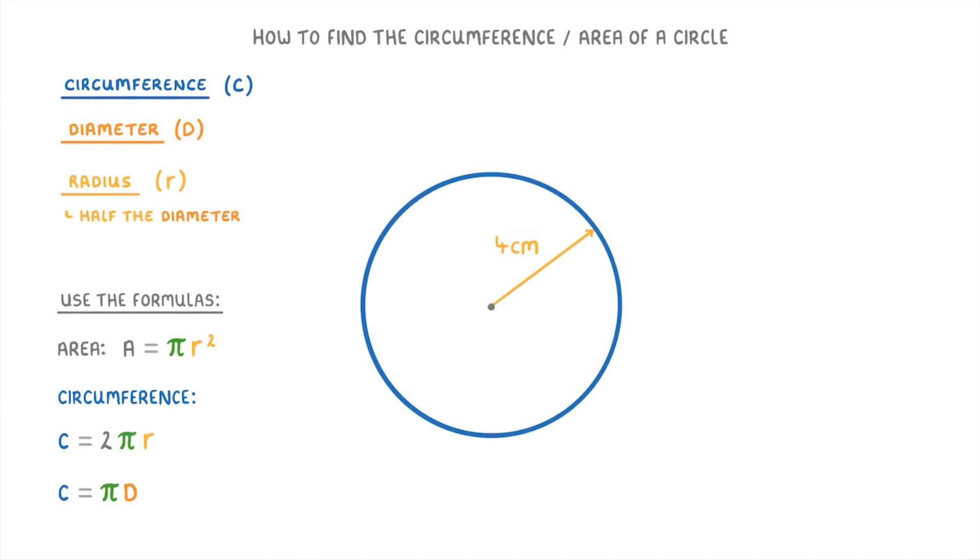To see how the equations work, let's take this circle here, and try to calculate its area and circumference. We can tell from the diagram that the radius of the circle is 4cm.